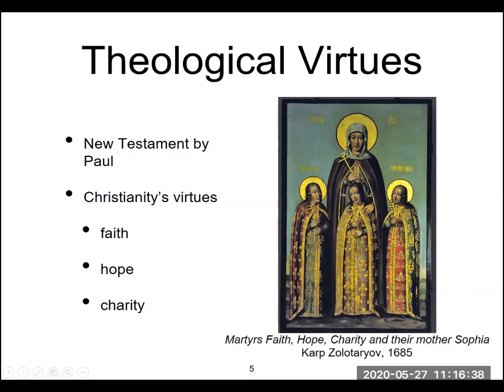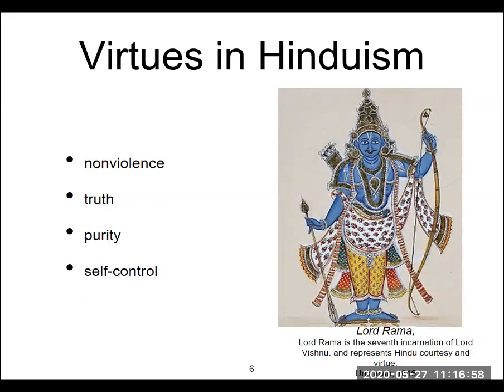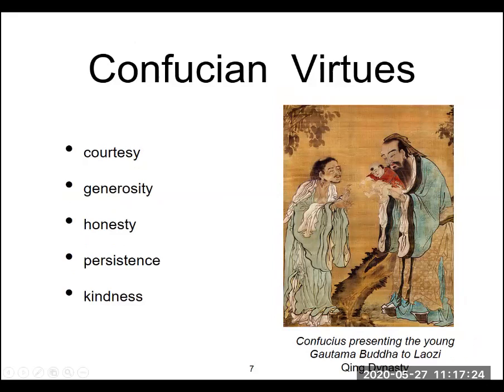A virtuous Christian person would act with faith, hope, and charity habitually, developing behavior according to that moral code. In Hinduism, the virtues are non-violence, truth, purity, and self-control — similar in some ways but with distinct differences based on culture and history. Confucianism has its own set of virtues: courtesy, generosity, honesty, persistence, and kindness.